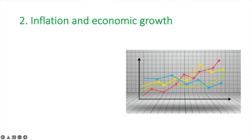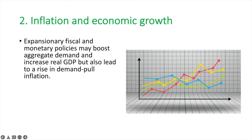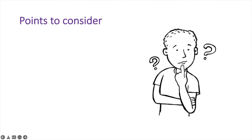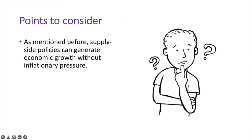There tends to be a close relationship between inflation and economic growth. Expansionary fiscal and monetary policies may boost aggregate demand and increase real GDP, but also lead to a rise in demand-pull inflation. Contractionary policies that reduce aggregate demand can be successful in reducing inflation but at the expense of economic growth. Supply side policies can increase productive capacity, which can generate economic growth without inflationary pressure.